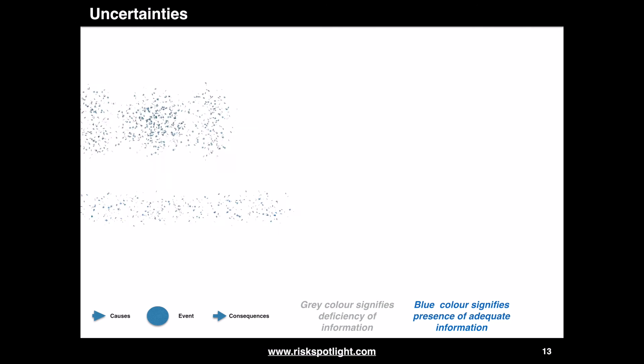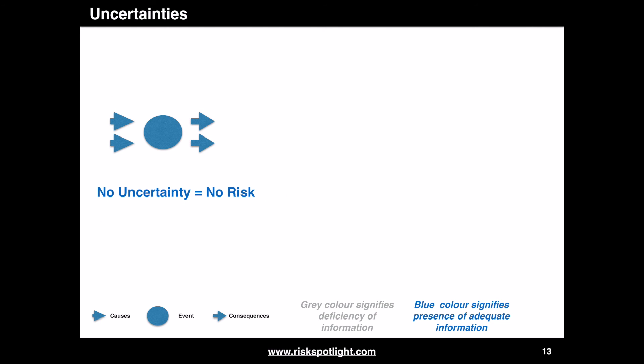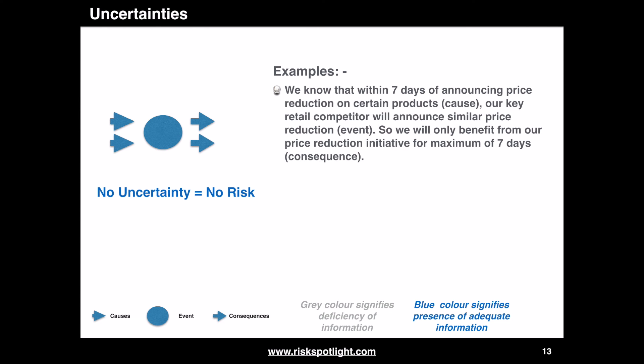The last variation covers the situation where we have adequate information about the cause, event, and consequences. In this case, since we have adequate information there is no uncertainty and hence there are no risks. For example, we know that within 7 days of announcing a price reduction on certain products our key retail competitor will announce a similar price reduction, so we will only benefit from our price reduction initiative for a maximum of 7 days.